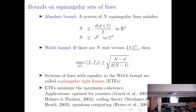Because of this property, equiangular tight frames have gained a lot of interest and have lots of applications. They have been shown to be robust under erasures — meaning that if some vectors are deleted, or if the coefficients in the signal representation are lost, sets attaining this bound are robust. They have also found applications in coding theory, quantum information processing, and other areas. There is a lot of literature in this area that I have not cited in the interest of space.